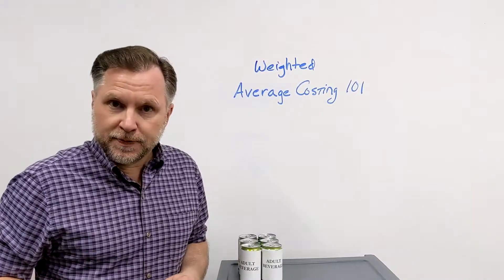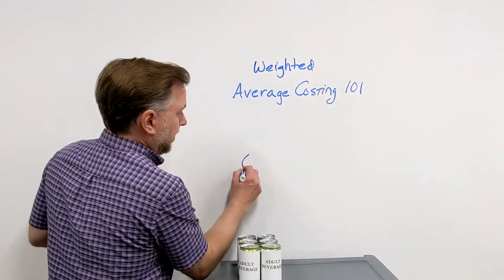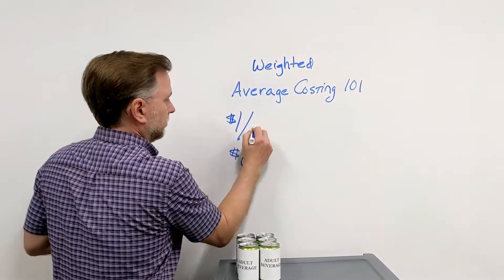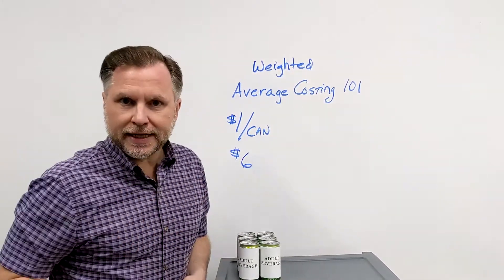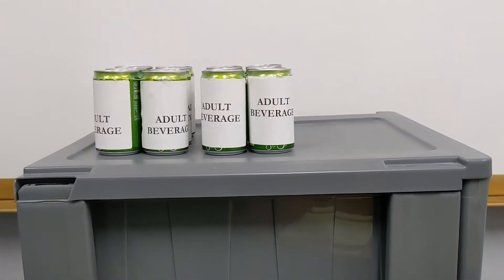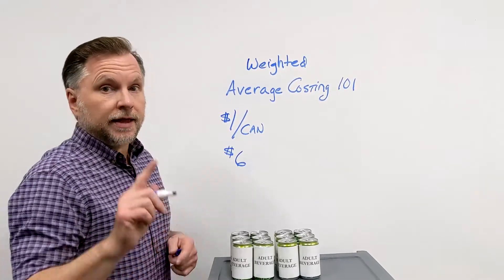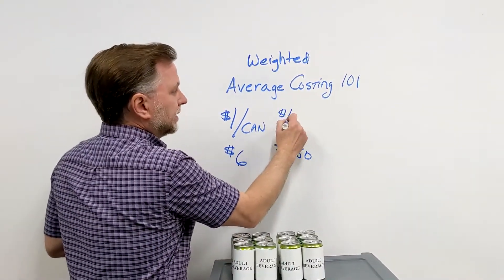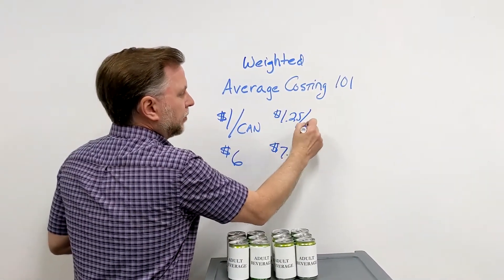So there's our first six pack of inventory. That costs $6 or $1 per can. But that's not enough. We need to go buy more inventory. So we've got another six pack that costs us $7.50 or $1.25 per can.